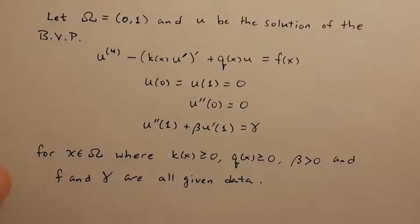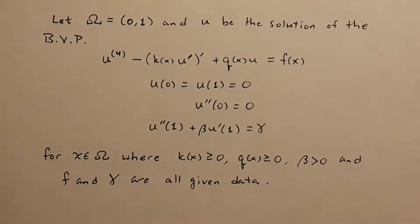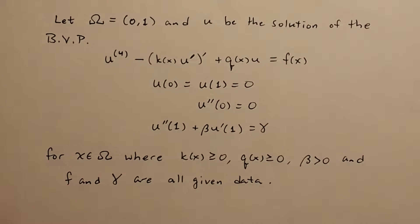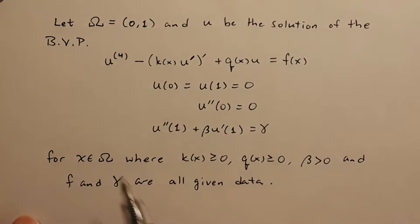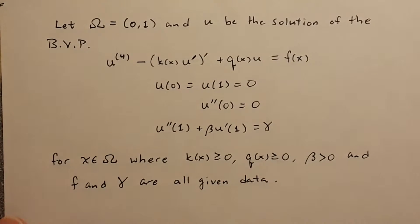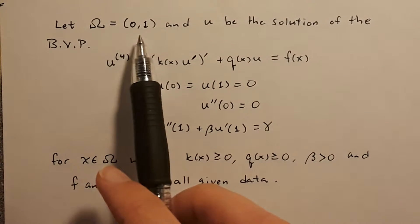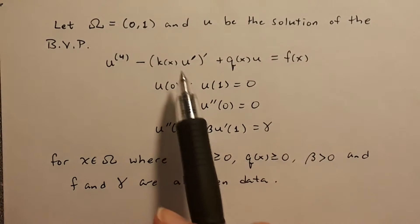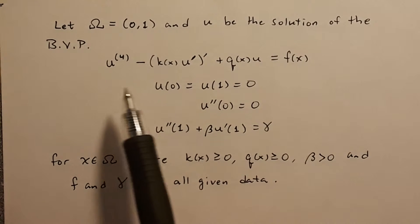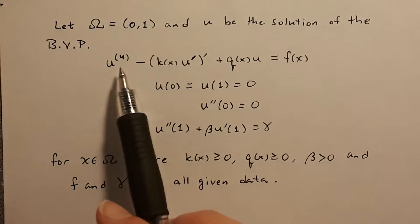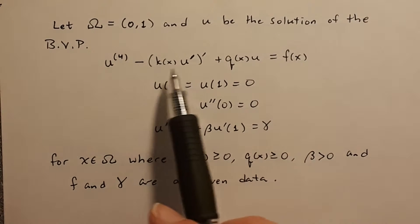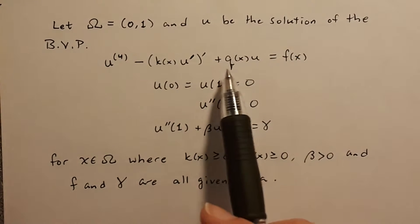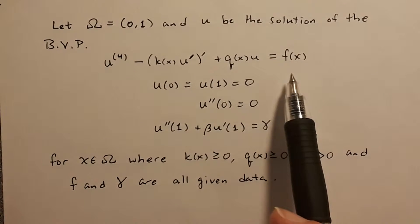Hello everyone. We're going to do some problems involving the finite element method for this boundary value problem. We're over the domain [0,1] and u solves this BVP. Specifically, this is a fourth derivative of u minus the derivative of k times u derivative of u, plus q times u is equal to f.